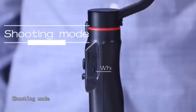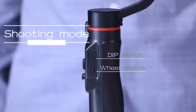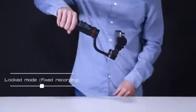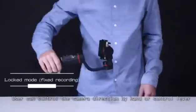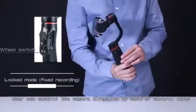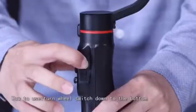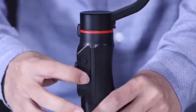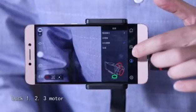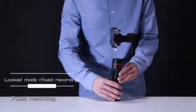Shooting mode. Lock mode fixes the recording. User can control the camera direction by hand or control lever. How to use: turn DIP switch down to the bottom, lock one, two, three motors to fix the recording.